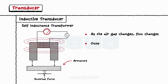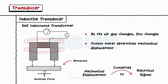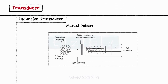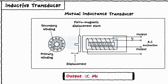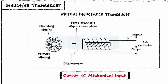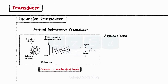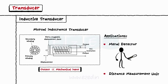That changes the inductance of the circuit and its output. The output meter directly gives the value of the input mechanical quantity. In a mutual inductance transducer, we have two different coils. In the first coil, excitation is generated by an external source of power, and in the second coil, the output is obtained. The output is proportional to the mechanical input. Common examples of inductive transducers are metal detectors, distance measurement, etc.